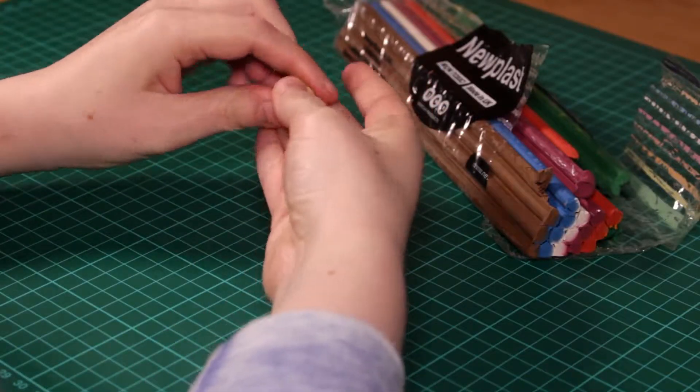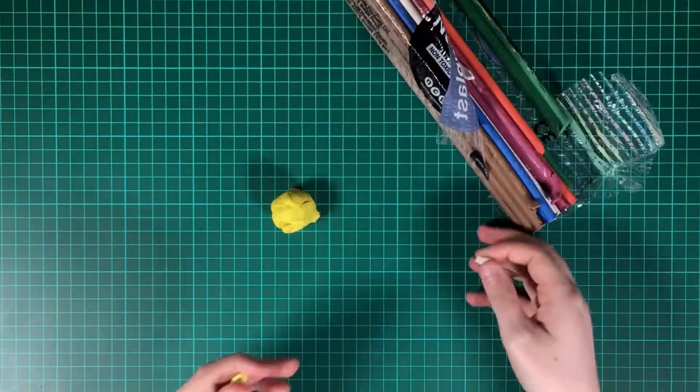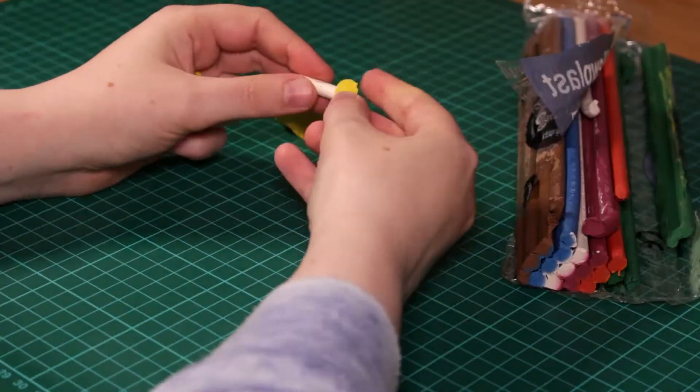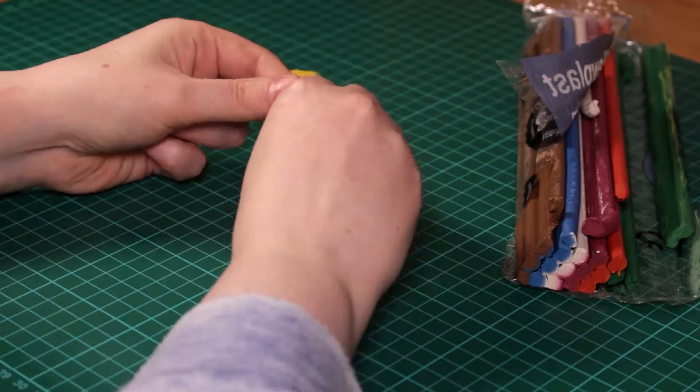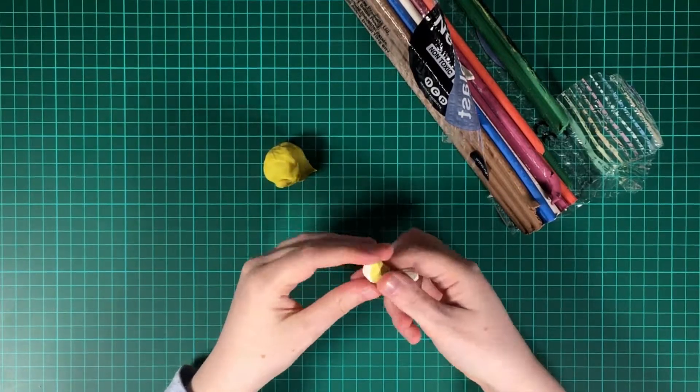To be able to sculpt a maggot, what you're going to need is some plasticine. I use Nuplast. I think it's a really good brand and it's never let me down. It's got a good amount of malleability and you can mix colours as you're seeing here.